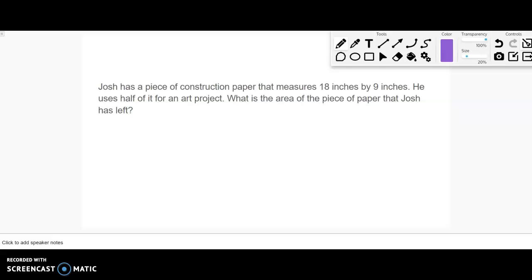Josh has a piece of construction paper that measures 18 inches by 9 inches. We can assume it's a rectangle since they're just giving us the two dimensions, so we have 18 and 9. Draw the rectangle on your paper. He uses half of it for an art project. What is the area of the piece of paper that Josh has left?